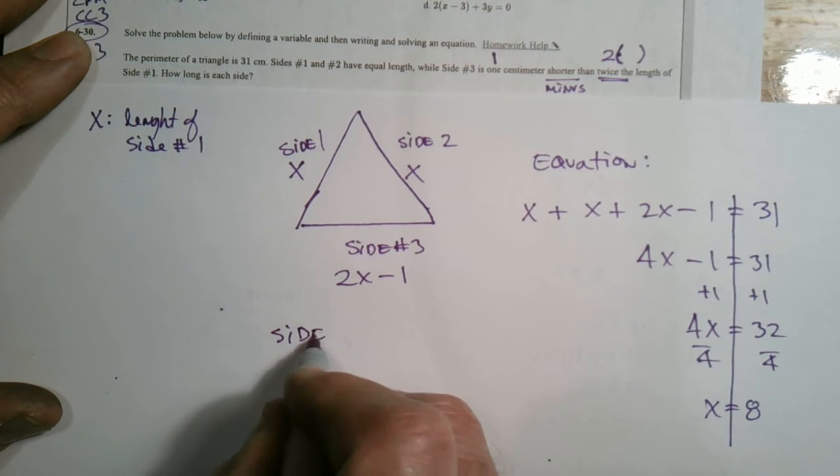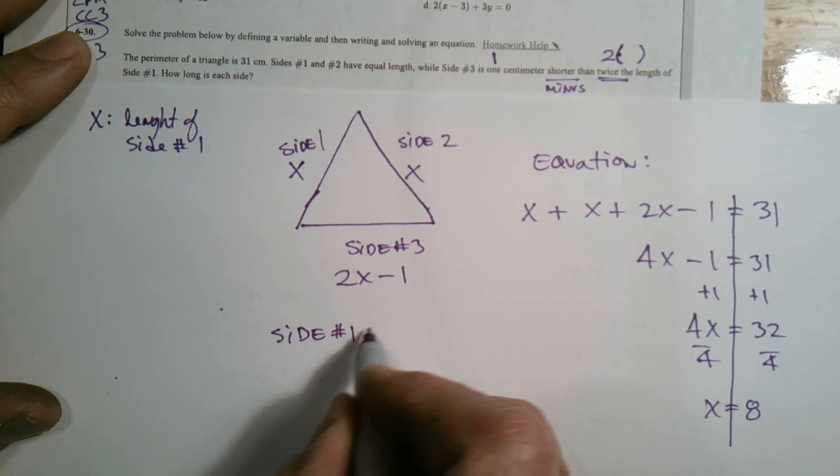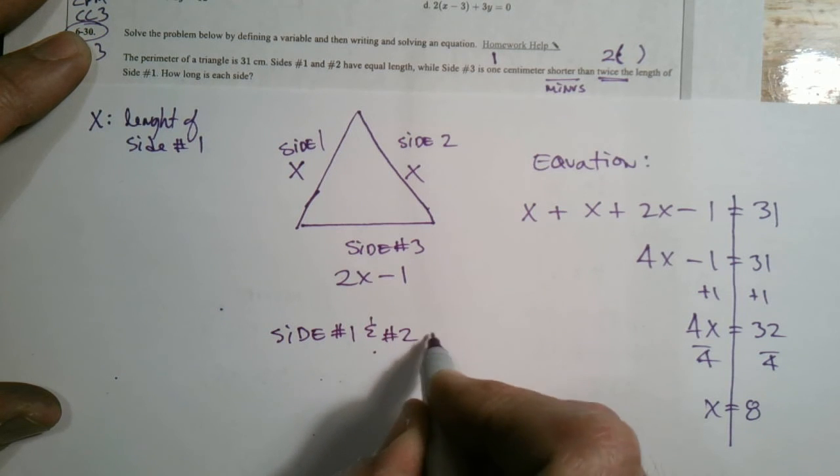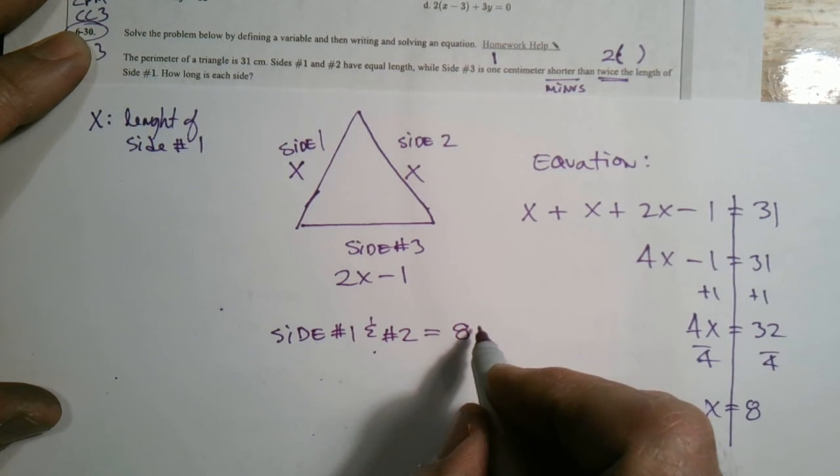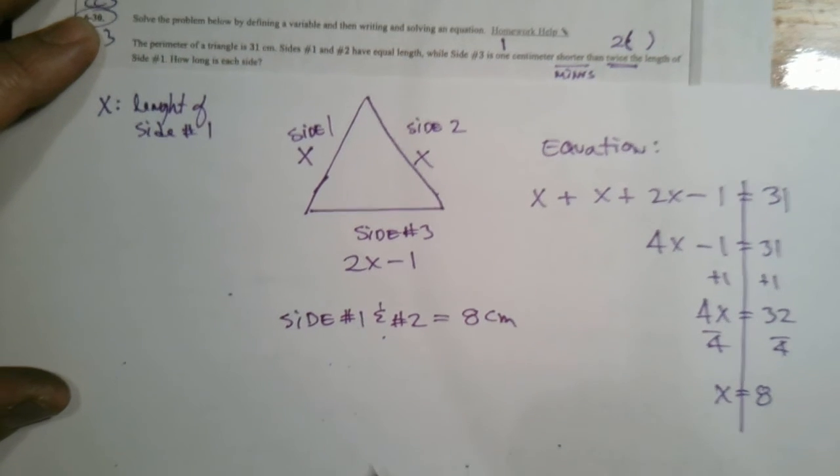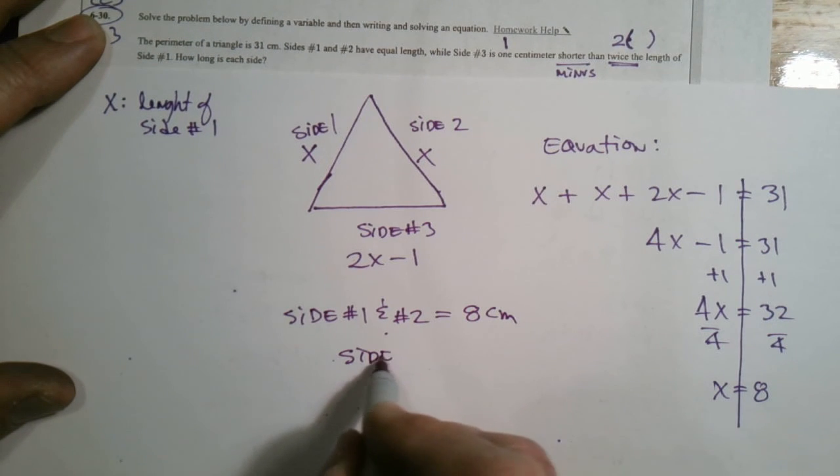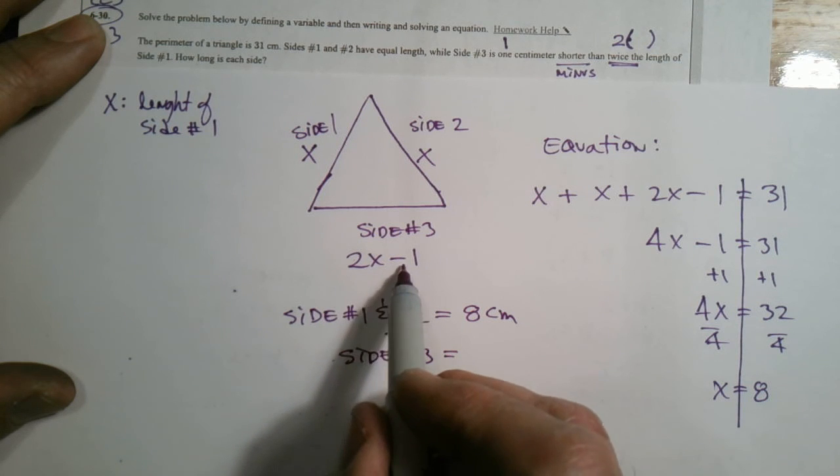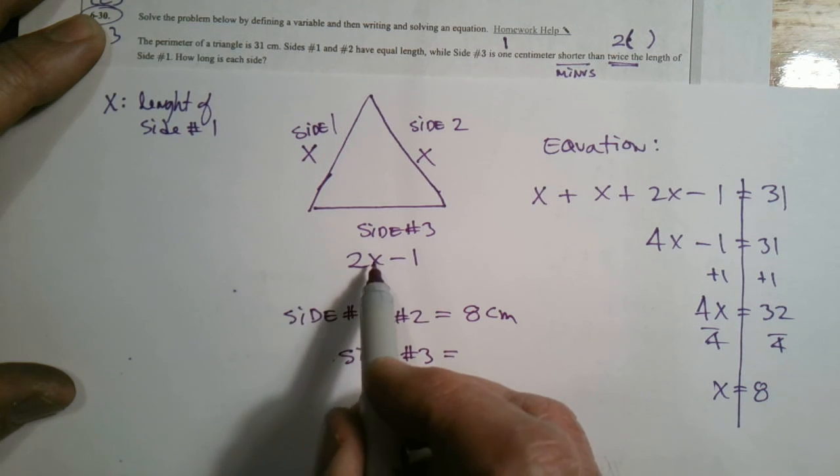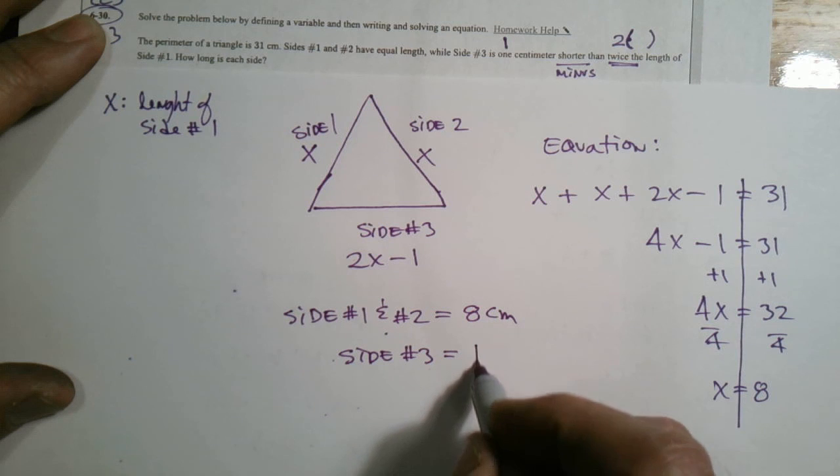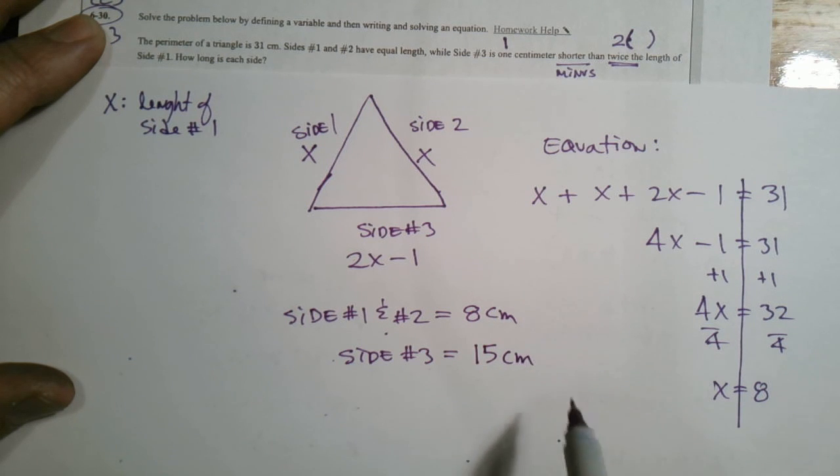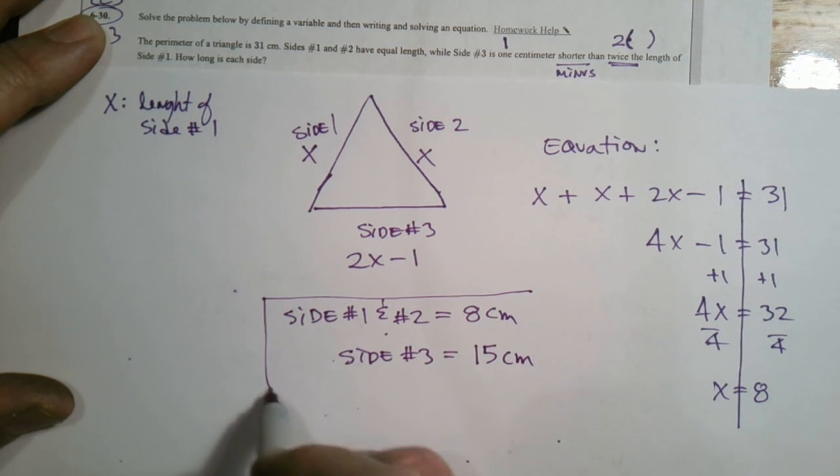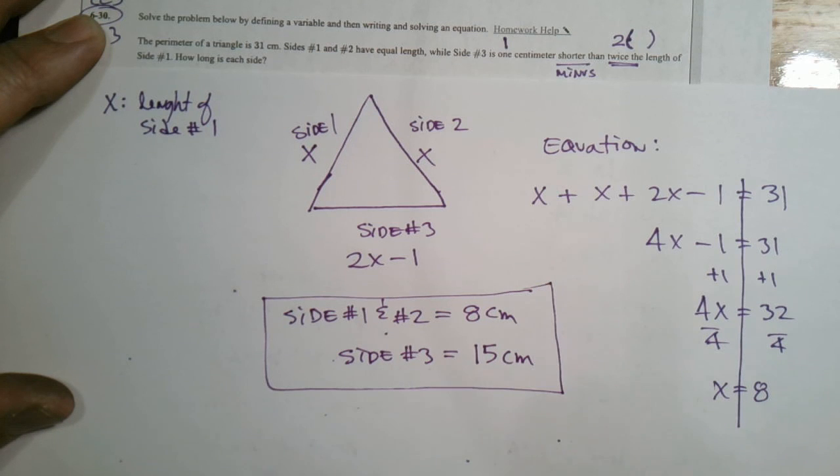Side number 1 and number 2 equals 8, equals 8, and we're doing the centimeters. And then side 3, number 3 is what? Well, it's 2 times 8 minus 1. 2 times 8 is 16 minus 1 is 15. And that right there is my answer. All right, there you go.